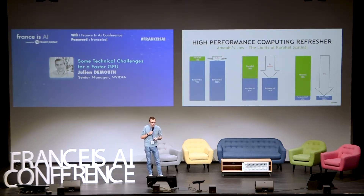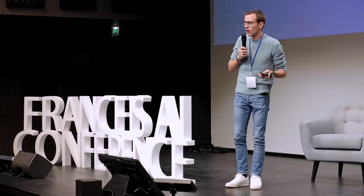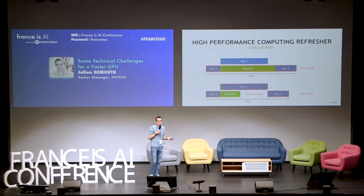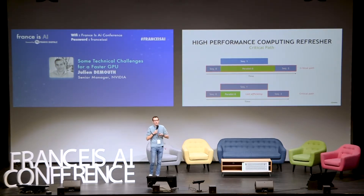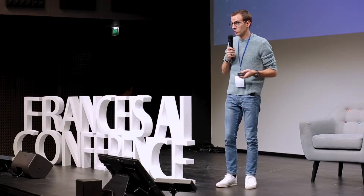If you start from an application that is mostly sequential, even if you make magic parallel processors, there's almost nothing you can do to speed it up. We were talking about transformers during the day — these deep neural networks for translation — and transformers are better than LSTMs in terms of compute intensity and also because they can more easily be parallelized. So the architecture of the networks you design is very important to allow us to give you better performance.